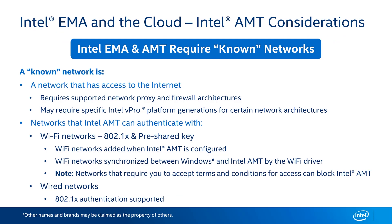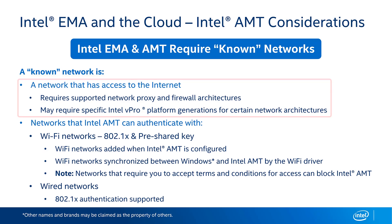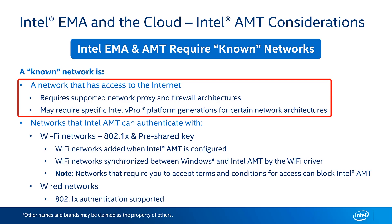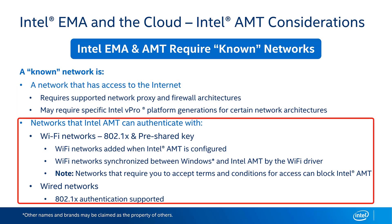If you plan on using Intel Endpoint Management Assistant with Intel Active Management Technology and a cloud-based install, there are a few considerations. First, you need what I call a known network. A known network has access to the internet so your Intel EMA server in the cloud can pass traffic to the device you want to manage. For certain proxy configurations, it may require a specific platform generation to support working behind a proxy server. Additionally, the network must be one that Intel AMT can authenticate with — for Wi-Fi we support 802.1x and pre-shared keys, and for wired networks we also support 802.1x authentication.